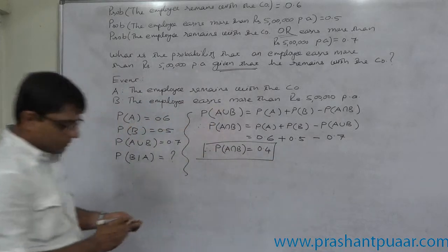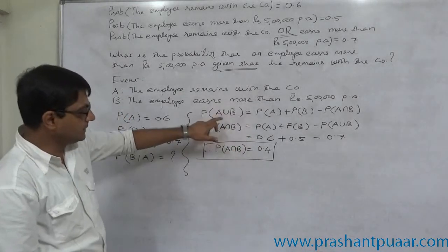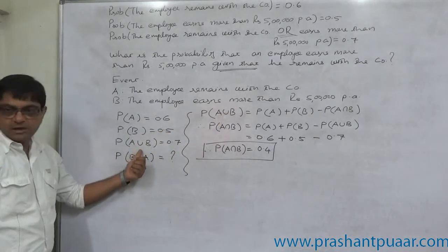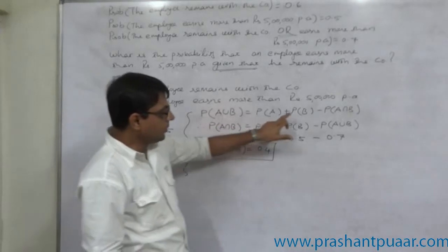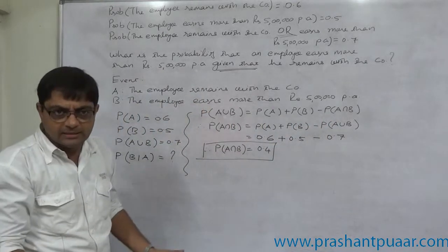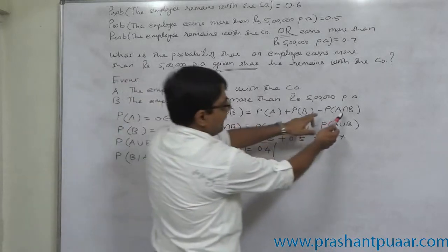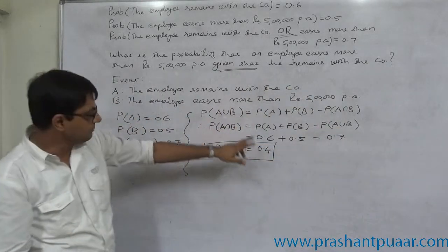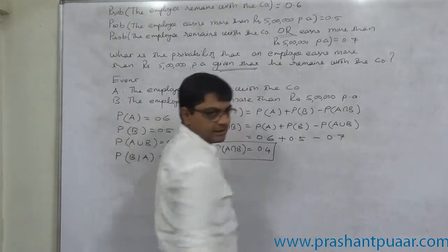Now we have P(A ∩ B), so we can calculate P(B|A). We used the formula for P(A ∪ B) because we had the value of P(A ∪ B) available. According to the general law of addition of probabilities, P(A ∪ B) = P(A) + P(B) − P(A ∩ B). Out of these four quantities, one was missing. We can find one missing value if the other three are available — union, P(A), and P(B) were all available. Making P(A ∩ B) the subject of the formula gives P(A ∩ B) = P(A) + P(B) − P(A ∪ B), and the answer is 0.4.